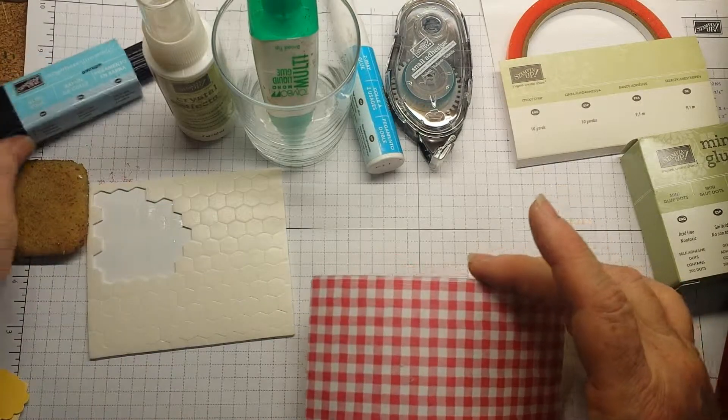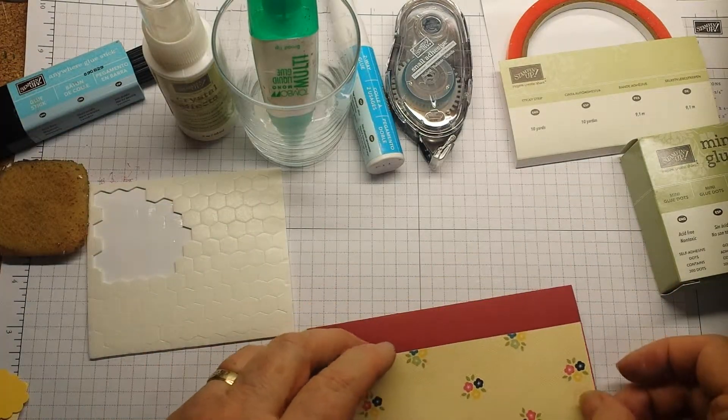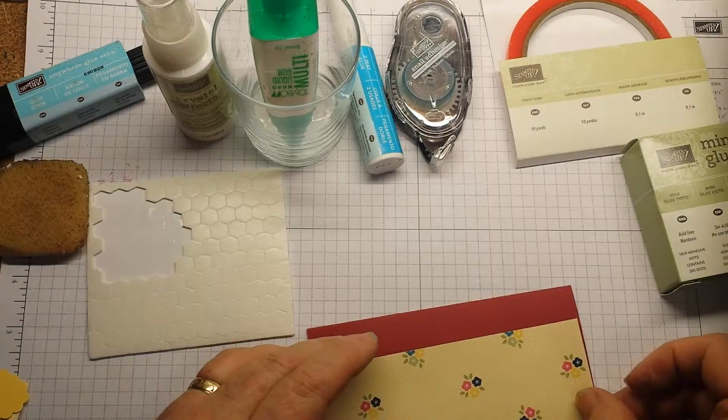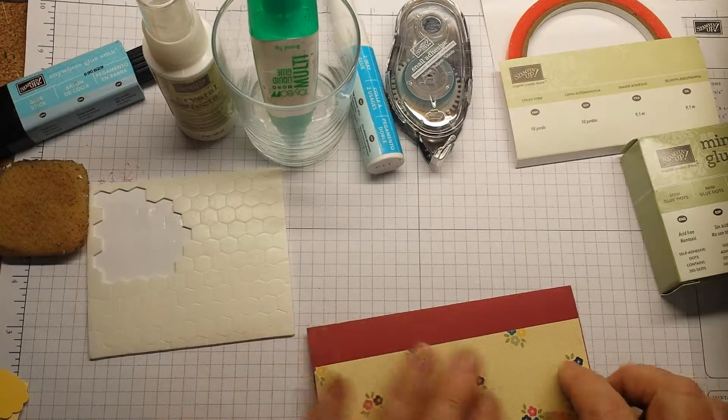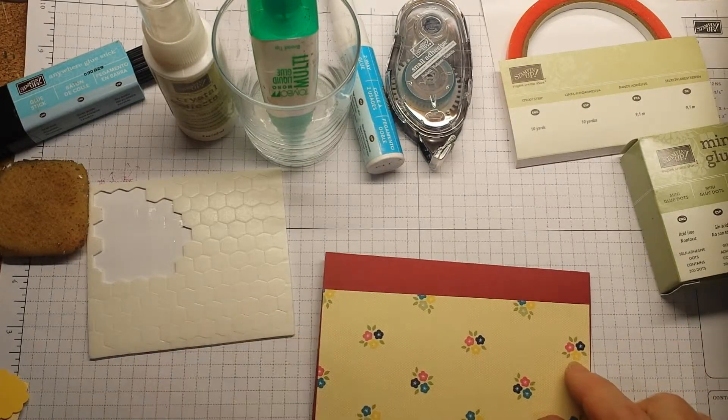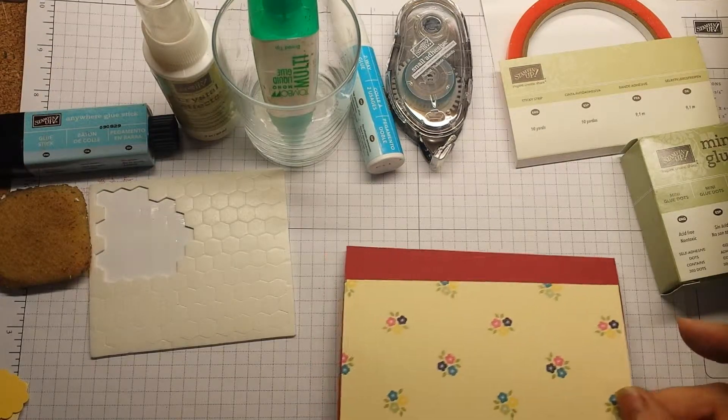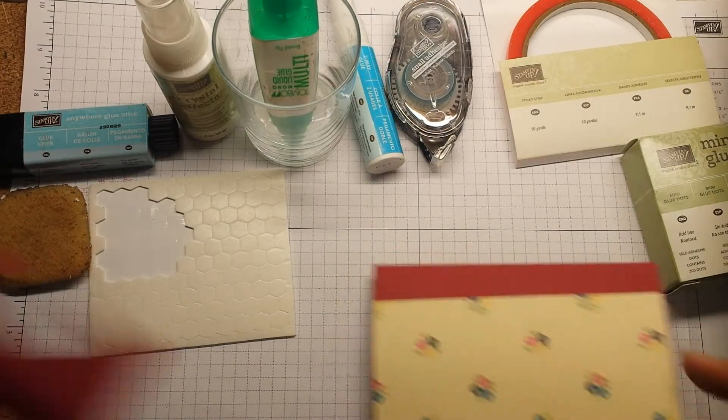We don't get all that clumping and lumping like many of the glue sticks that so many of the kids use. And so that's one adhesive, Anywhere Glue Stick, and that's really great for paper to paper.